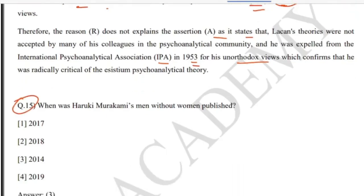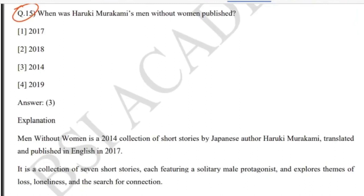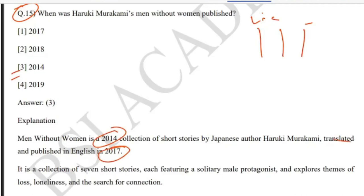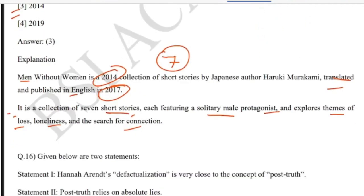Question 15 is where mugging up facts really helps. The question asks: when was Haruki Murakami's 'Men Without Women' published? The answer is 2014 — it was published in 2014 and translated into English in 2017. It is a collection of seven short stories, each featuring a solitary male protagonist, exploring themes of loss, loneliness, and the search for connection.